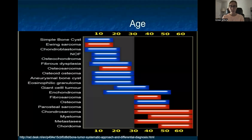Age is really important. Looking at this graphic, blue is benign and red is malignant. Most lesions under the age of 30 tend to be benign. The two more common malignant lesions in the youth are Ewing sarcoma and osteosarcoma. Really after the age of 30, any bone lesions that tend to pop up have a higher risk of malignancy. So age does help us differentiate between benign and malignant bone lesions.